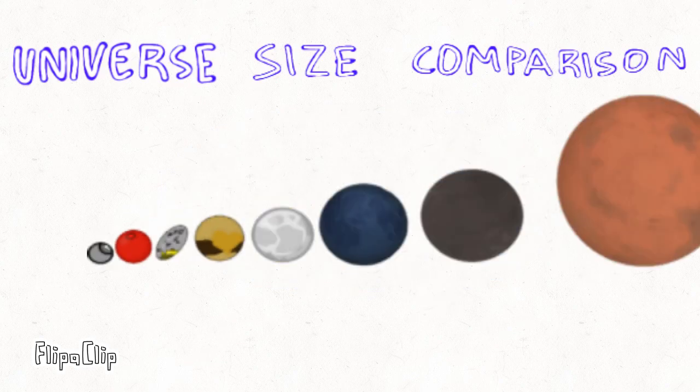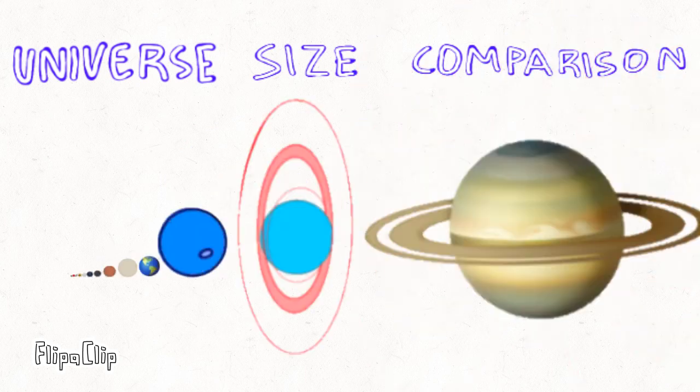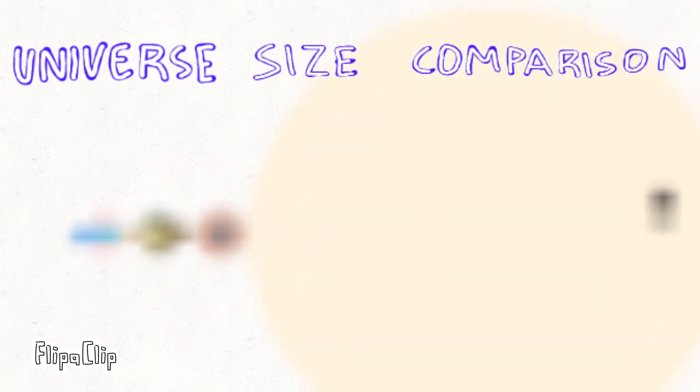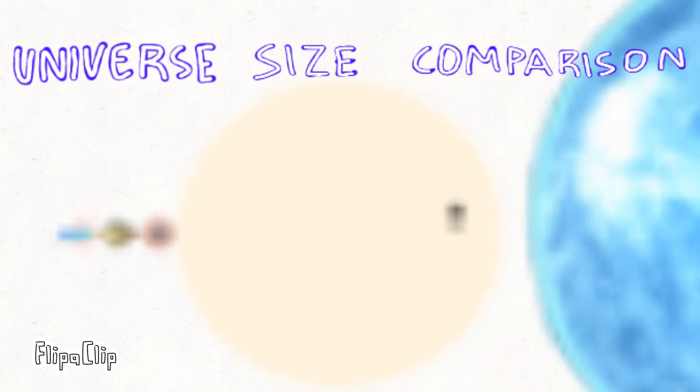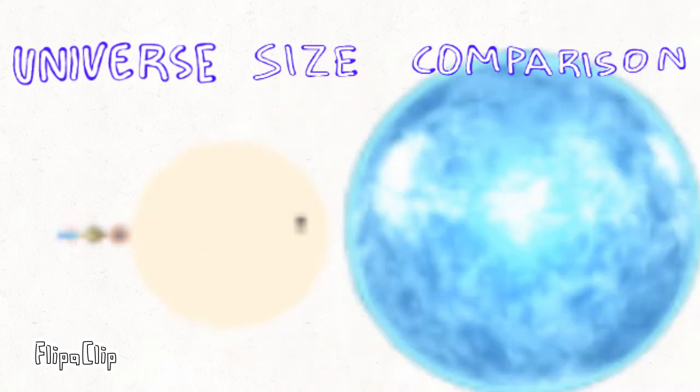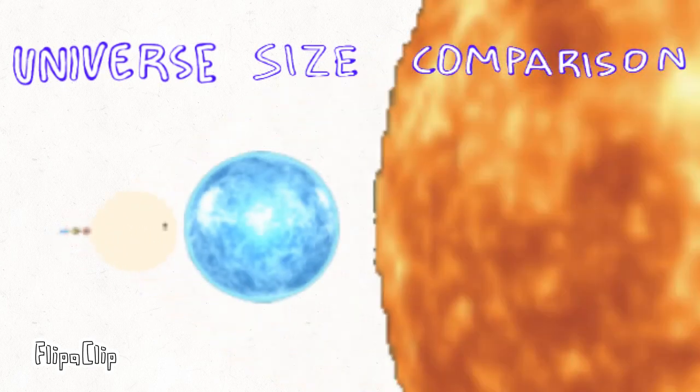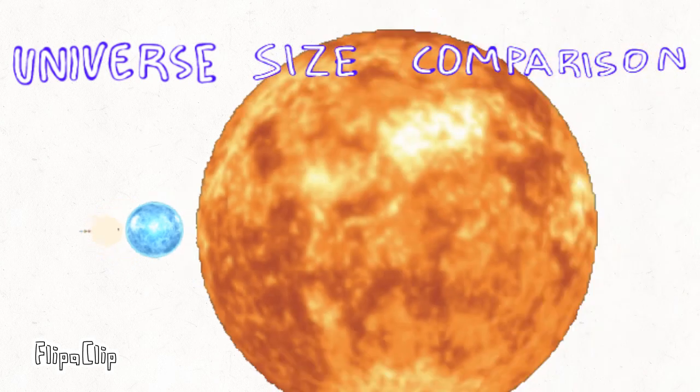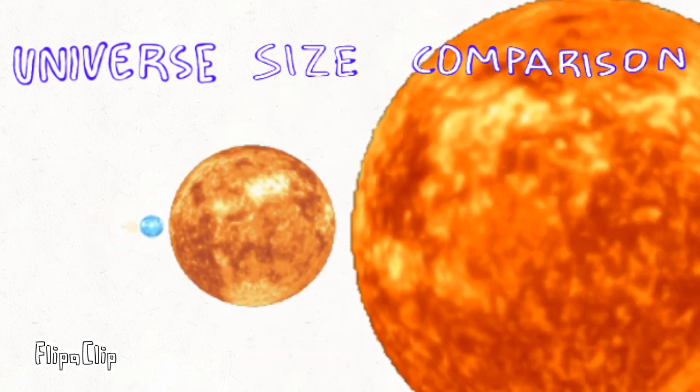This is a size comparison of objects in the universe. We'll start with the smallest and go to the largest, most well-known object we know, of course.